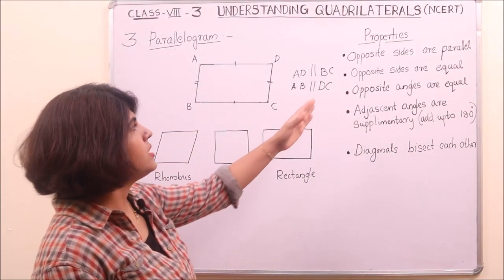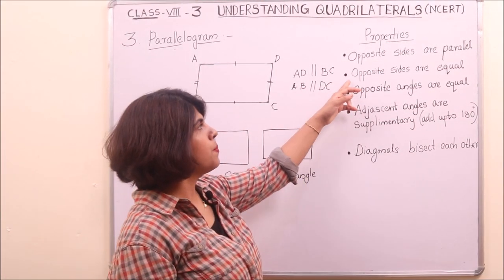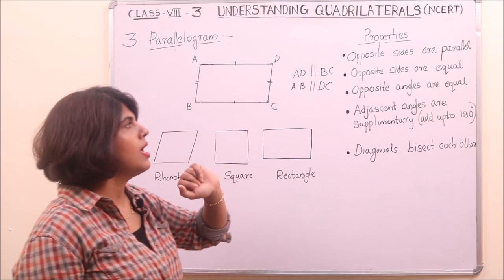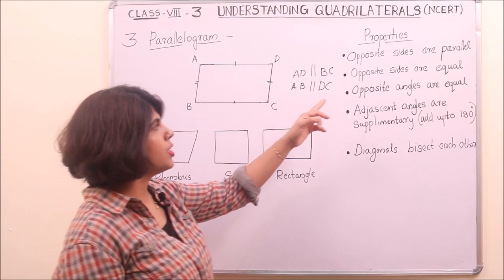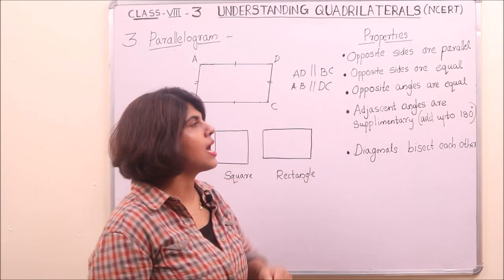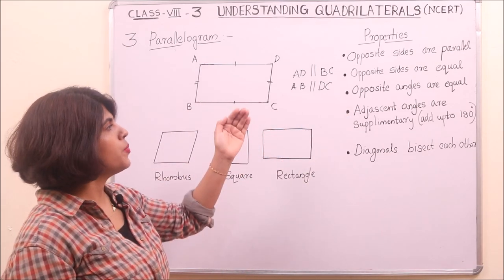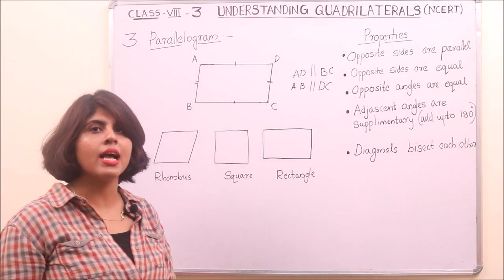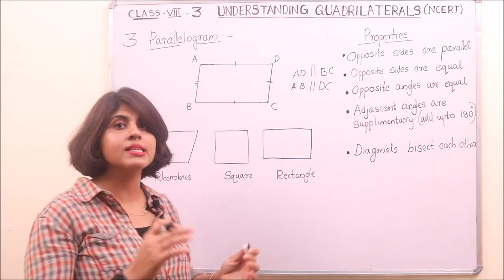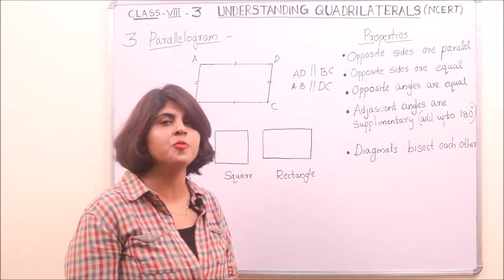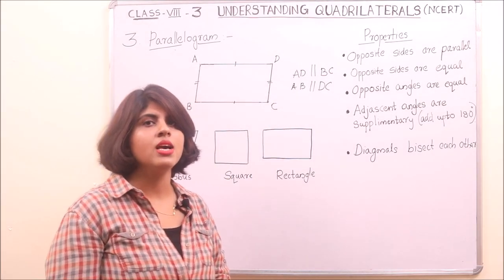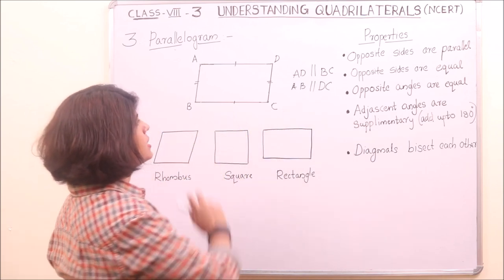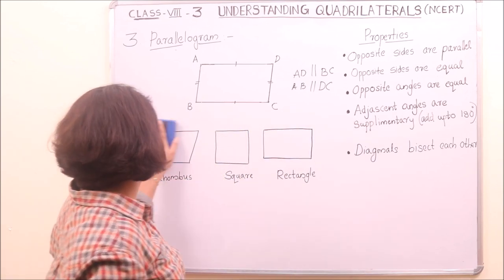The second property is opposite sides are equal, and the third property is opposite angles are equal. We can prove these two properties with the help of the congruence criteria of triangles. Let us prove these two properties using this parallelogram.